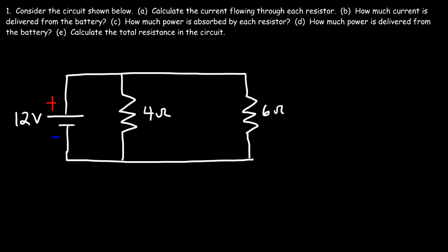This video is all about how to solve DC circuits with parallel resistors. Consider the circuit shown below — calculate the current flowing through each resistor. Let's call this resistor 1 and resistor 2. How can we determine how much current flows through each resistor?